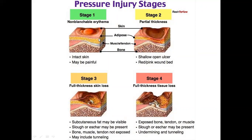In stage 1, most of the skin is intact — intact skin with an area of persistent non-blanchable redness, typically over a bony prominence. Ulcers especially start in areas of bony prominence, like the sacrum and lateral malleolus. Stage 1 is intact skin that may be painful.